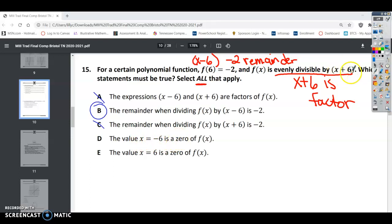And the value x equals negative 6 is a zero. So this right here, x plus 6, if we set that equal to 0, and subtract, x equals negative 6. So that one is a zero. That one's evenly divisible. That's a factor. And the value of 6 is a zero. We know that one's not a zero because, again, it has a remainder of 2.